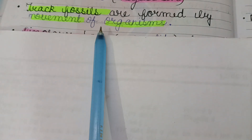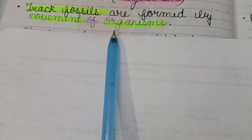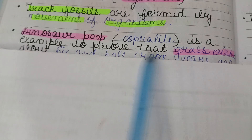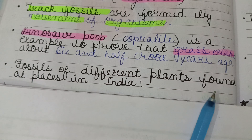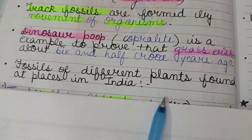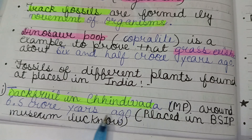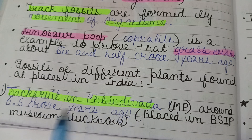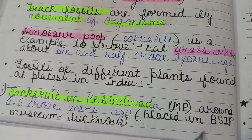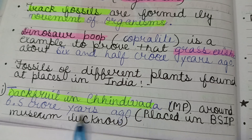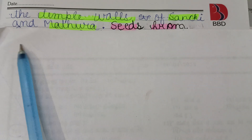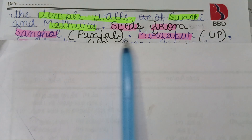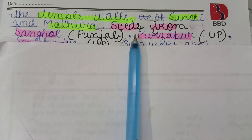Trace fossils are formed by the movement of organisms. Dinosaur poop — called coprolite — is an example that proves grass existed about 6.5 crore years ago. Among fossils of different plants found in India: jackfruit fossils were found in Chhindwara, Madhya Pradesh, from around 6.5 crore years ago, and are now placed in the Birbal Sahani Institute of Palaeobotany Museum in Lucknow. Custard apple is engraved on the temple walls of Sanchi and Mathura.